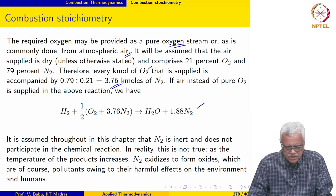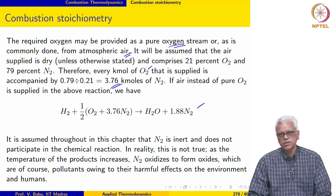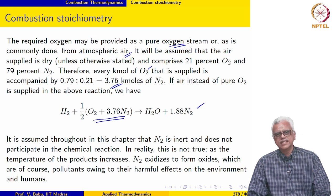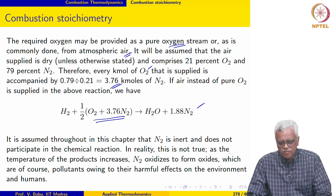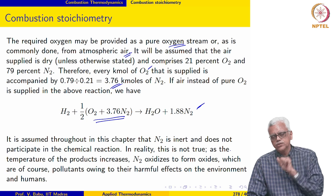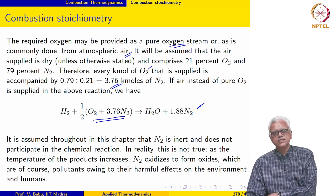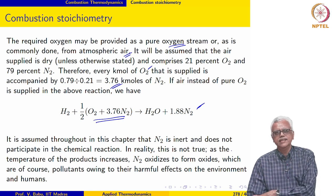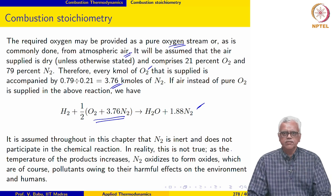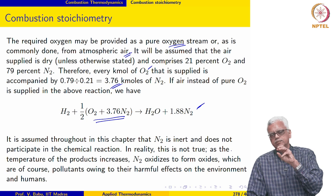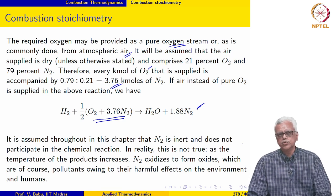If we accomplish combustion using oxygen from the air instead of a pure oxygen stream, we replace O2 with (O2 + 3.76 N2), and N2 appears on the product side as well. In this course, we assume nitrogen to be inert — it does not participate in the chemical reaction. However, nitrogen will absorb heat released from the reaction, so its temperature will rise, and its enthalpy changes will be accounted for as part of the ideal gas mixture on the product side.